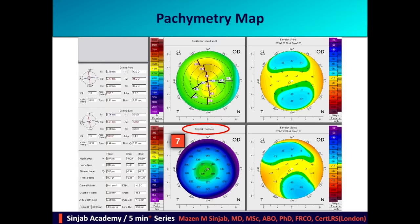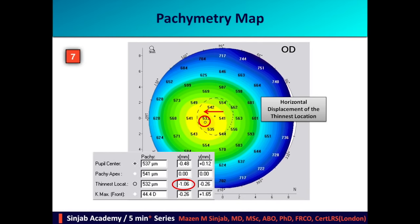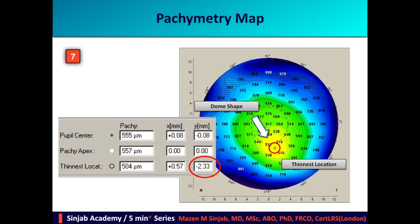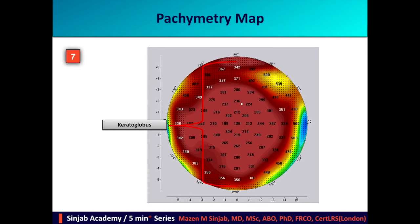The pachymetry map: we have to look at the pattern. The normal pattern is the disc or concentric form. A horizontal displacement of the thinnest location can occur with misalignment during capture or large angle kappa. The dome shape — a vertical displacement of the thinnest location — is characteristic of ectatic corneal diseases in 90% of cases. The bell shape indicates inferior band thinning and is a hallmark of pellucid marginal degeneration. The keratoglobus pattern shows generalized thinning extending to the limbus.